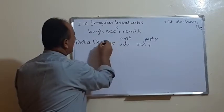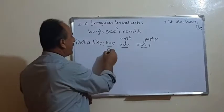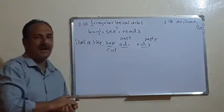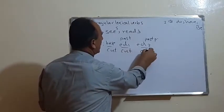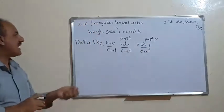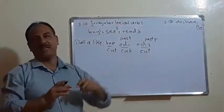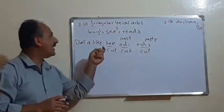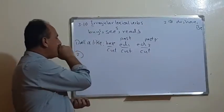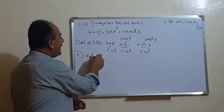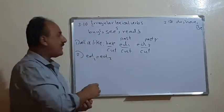For example, the verb 'cut' — the past is 'cut' and the past participle is also 'cut'. Similarly 'put': put, put, put. Or 'shed': shed, shed, shed. So Group 1 means all forms are alike. The second group of irregular verbs is when ed1 equals ed2 — the past and past participle are the same.